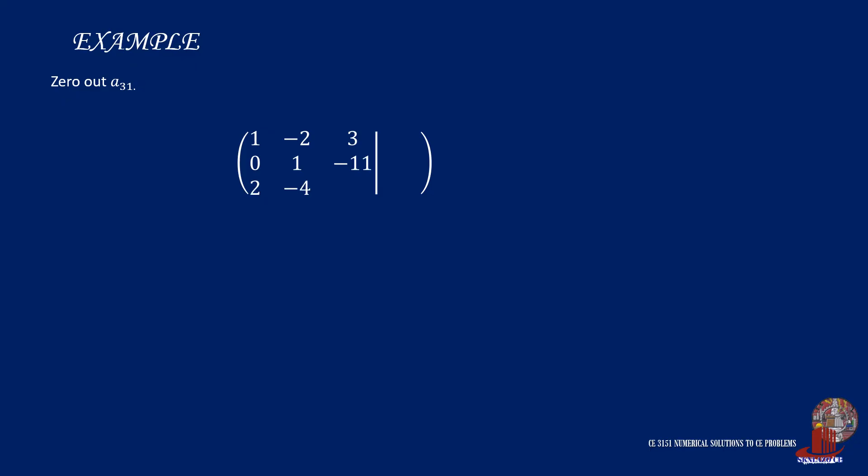The next step is to zero out element 3,1 by the row operation row 3 minus twice of row 1. We have 2 minus twice of 1, which is 0 as the new element 3,1.